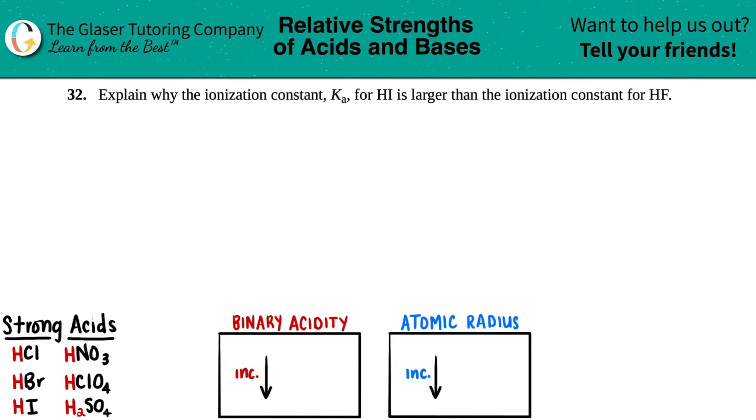Number 32, explain why the ionization constant Ka for HI is larger than the ionization constant for HF. Okay, so this will be an explain question. Basically, we have to write in either diagrams or words. So this is basically just a theoretical question. But the question is, basically, why is a Ka value greater for HI than the Ka value for HF?